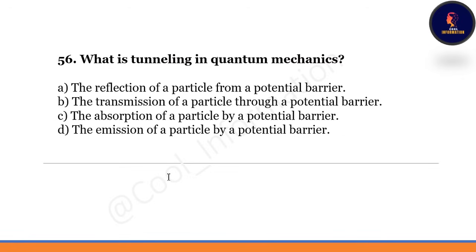Last question: what is tunneling in quantum mechanics? Option A: the reflection of a particle from a potential barrier. Option B: the transmission of a particle through a potential barrier. Correct option is B — the transmission of a particle through a potential barrier.